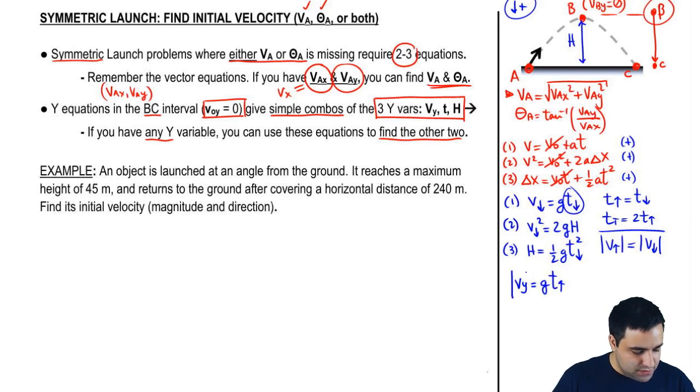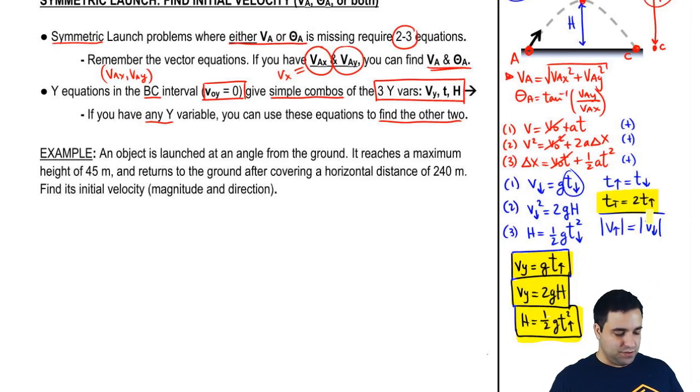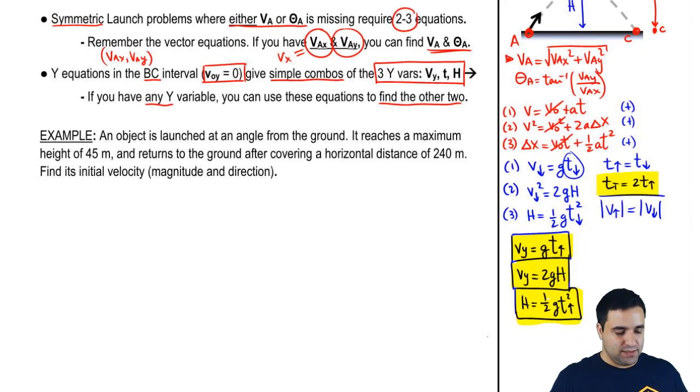I'm going to put a T up here just so we're sure that's not the total time. VY, whether it's up and down, doesn't matter, A or C, equals two GH. And the last one is going to be H equals half of G, T up squared. Again, it doesn't matter that I'm using time up or time down. They are the same. And remember that the total time is a combination, is the addition of both. So it's just twice the time up or twice the time down.